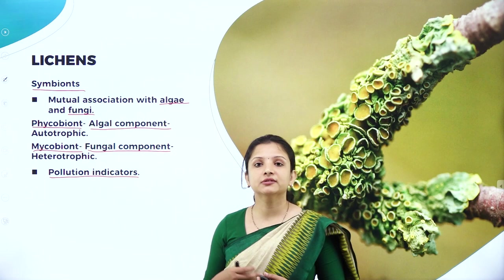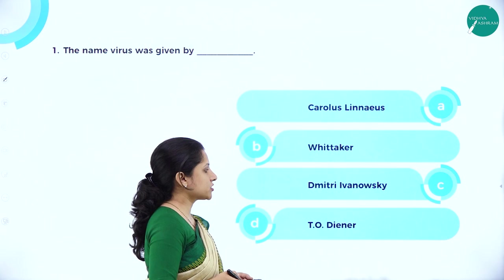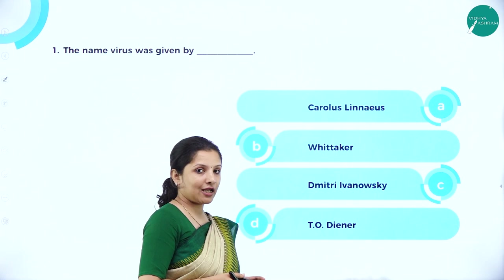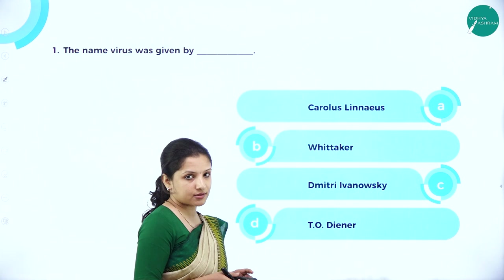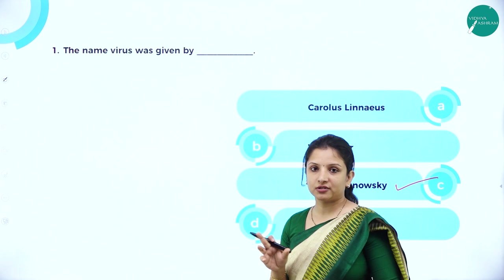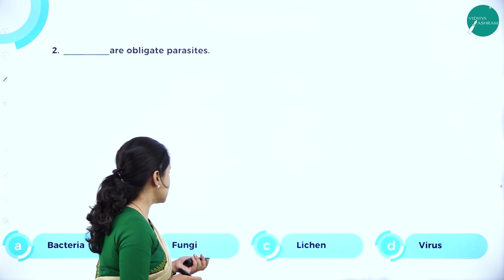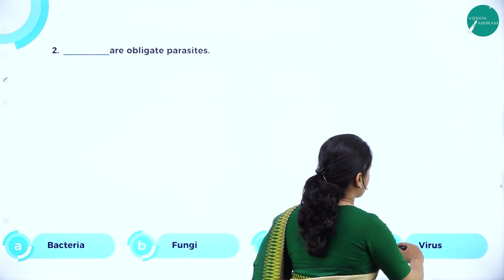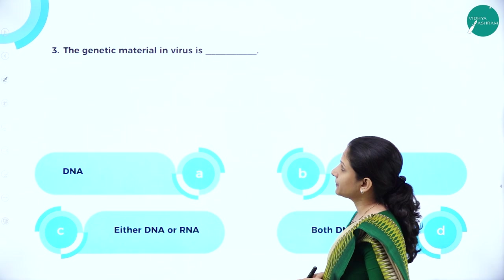Now let us move on to solving some MCQs that can be framed from this topic. First: 'The name virus was given by — Carolus Linnaeus, Dmitry Ivanovsky, or T.O. Diner?' T.O. Diner gave the name viroids; Carolus Linnaeus is the father of binomial nomenclature and has something to do with taxonomy; Whittaker has something to do with the classification system. The answer is Dmitry Ivanovsky, who was the first to discover viruses and call virus a poisonous or venomous fluid. Next: 'Dash are obligate parasites.' Bacteria, fungi and lichens can survive without a host, but viruses are obligate parasites — they always need a host to multiply or replicate.